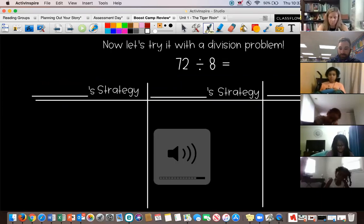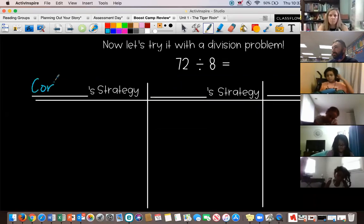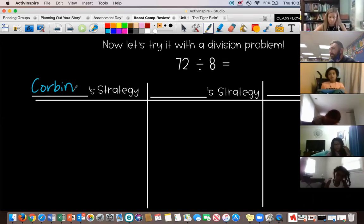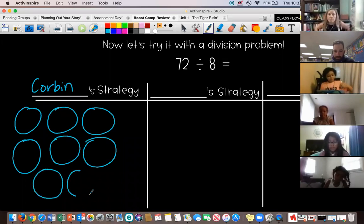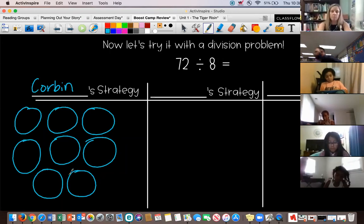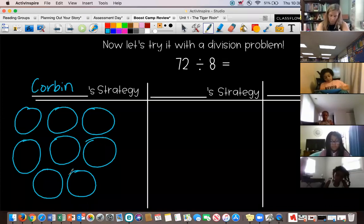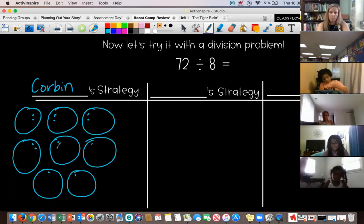I did the circle strategy where I put the dots in it. All right, talk me through it. So I drew eight circles. Why did you draw eight circles? Because that's the number of groups. Okay, keep going. And then I put dots in each one until I got up to 72. And I counted my dots to go over them twice. And I got nine as my answer.